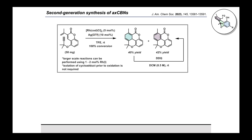We screened a handful of rhodium catalysts, silver salts, and solvents at different temperatures, concentrations, and reaction times, and identified rhodium cod chloride dimer with silver triflate in trifluoroethanol at room temperature as the optimal conditions, leading to a combined 82% yield of the cycloadduct and its oxidation product. As a control, we performed this reaction in the absence of catalyst and confirmed that rhodium(I) is essential for the transformation.